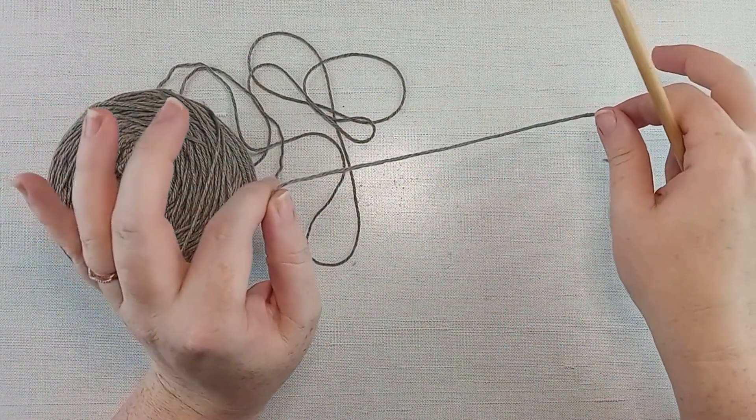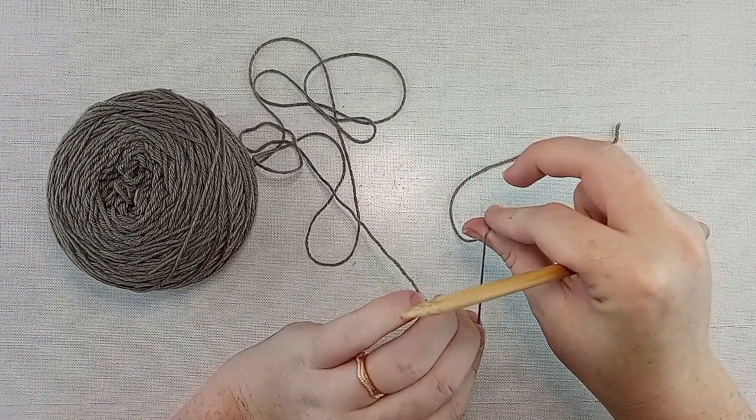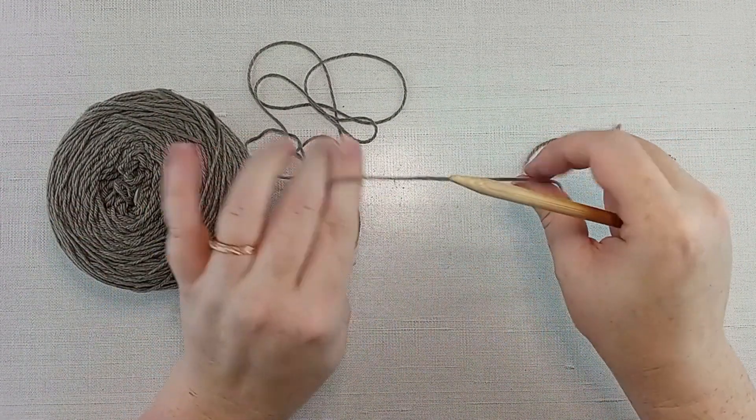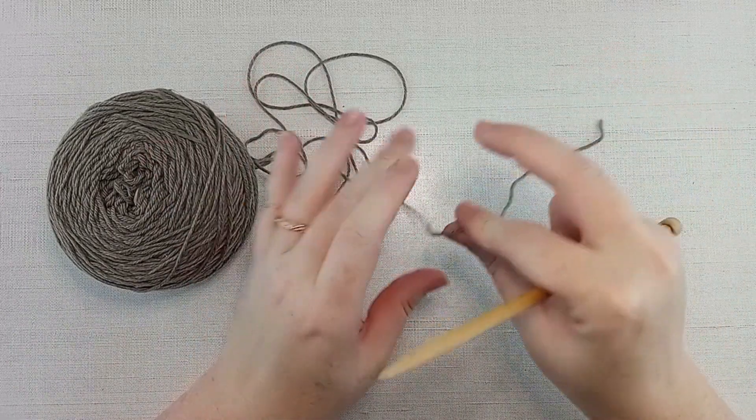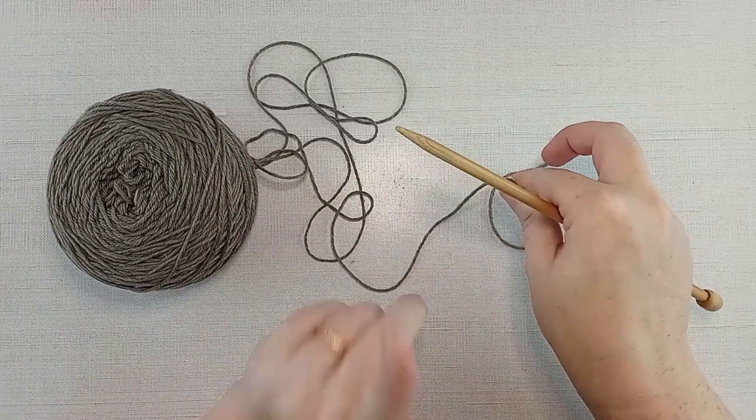The long tail cast on is my favorite all-purpose cast on. I use it for sweaters, shawls, anything where the edge of my fabric needs just a little bit of give, but not too much, not too stretchy. That's a different cast on.